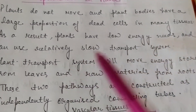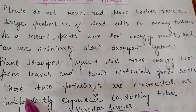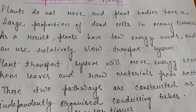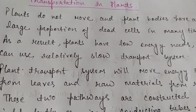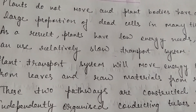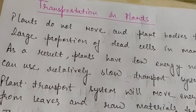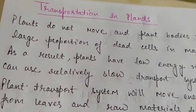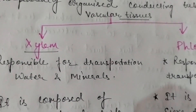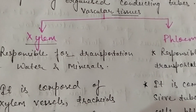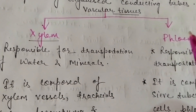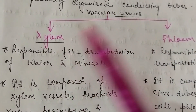The plant transport system will move energy stores from leaves and raw material from roots. So the transport system in plants will go from roots and travel through the leaves. If the distance is small, it can go through diffusion; otherwise, a separate transportation system is needed. These two pathways are constructed as independently organized conducting tubes. Plants have vascular tissues — conducting tubes — which transfer water and food from the roots to other parts of the plant.